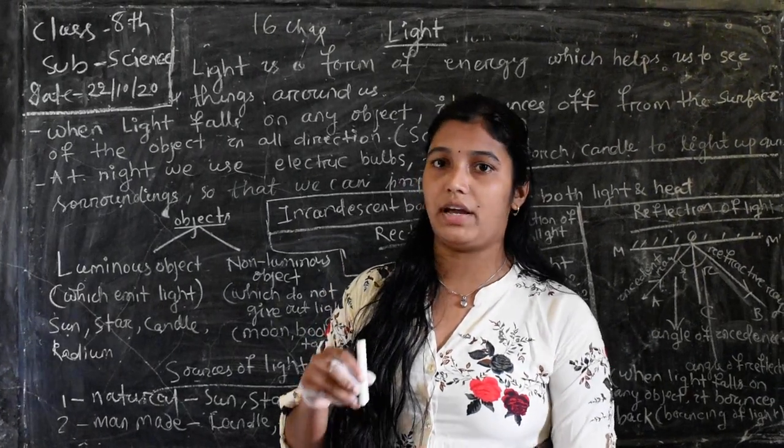You know the sun is there in day or star at night. Candle is a man-made thing and radium is also a thing. You can see radium in any watch or things, so it's a luminous object.